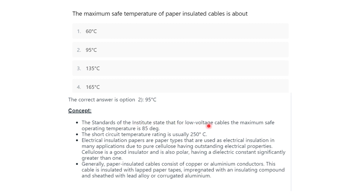The standards state that for low voltage cables the maximum safe operating temperature is 85°C and the short circuit temperature rating is usually 250°C. Electrical insulation papers are used in electrical insulation due to pure cellulose having outstanding electrical properties. Cellulose is a good insulator with a dielectric constant significantly greater than one. Paper insulated cables consist of copper or aluminium conductors insulated with lapped paper tapes, impregnated with insulating compounds, and sheathed with lead alloy or corrugated aluminium.